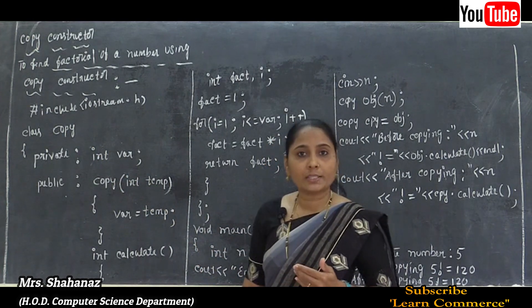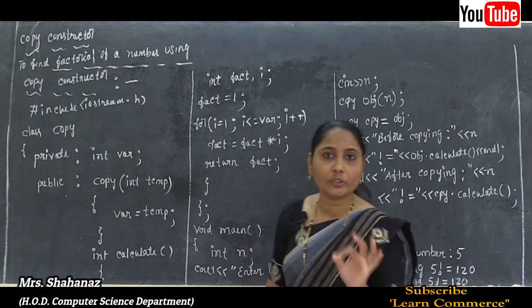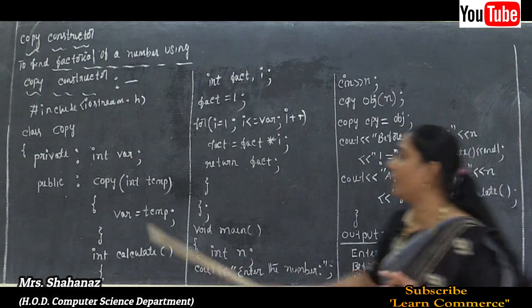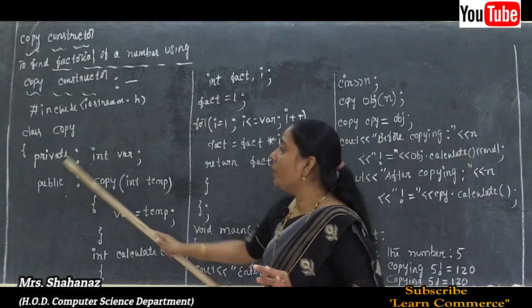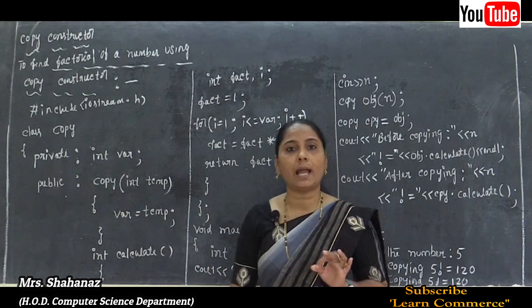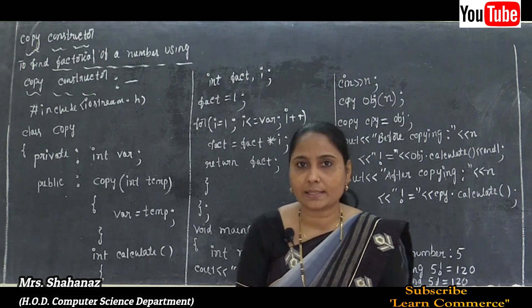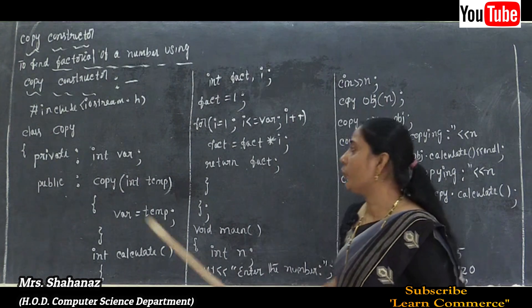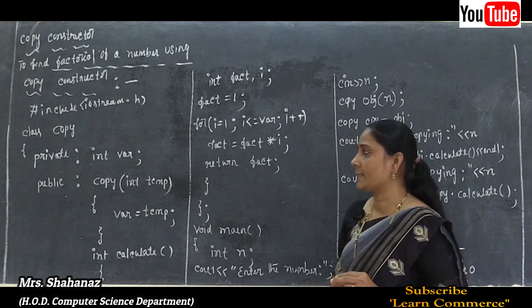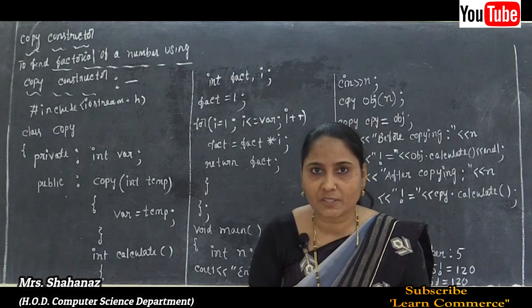The variable 'var' is declared using the data type int. Any member data declared inside the class uses an access specifier. Here we use the private access specifier for the member data. For the member functions, we use the public access specifier.